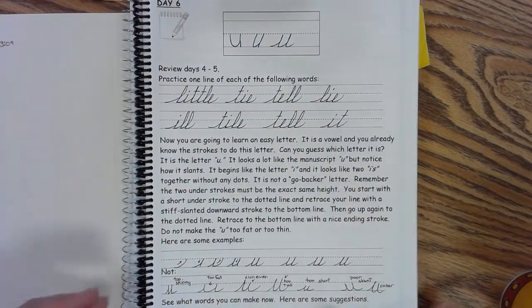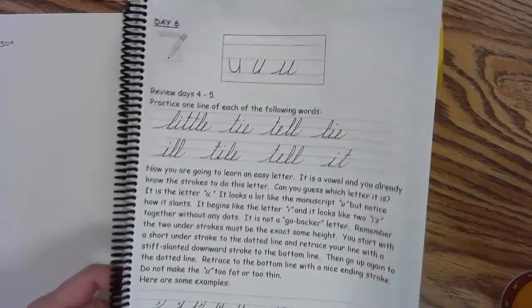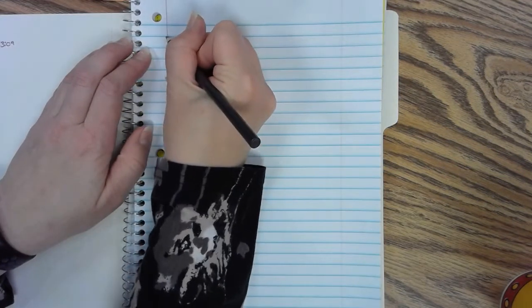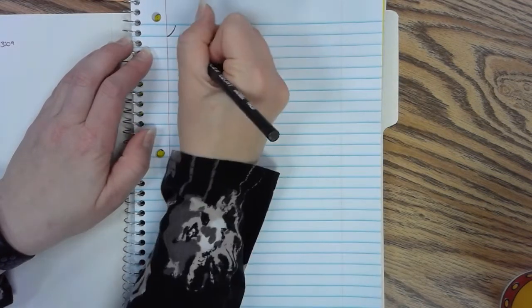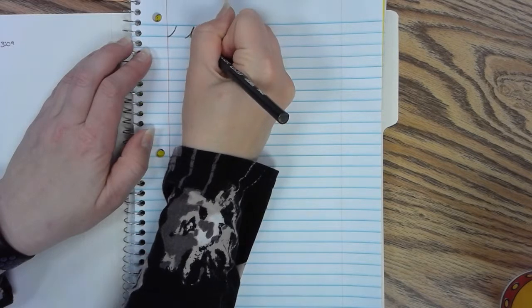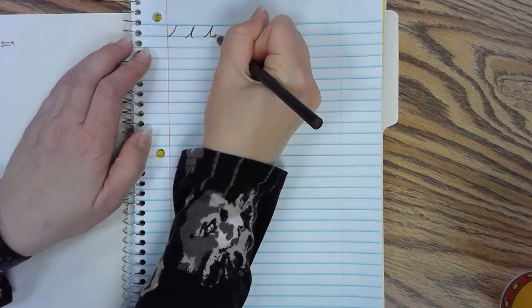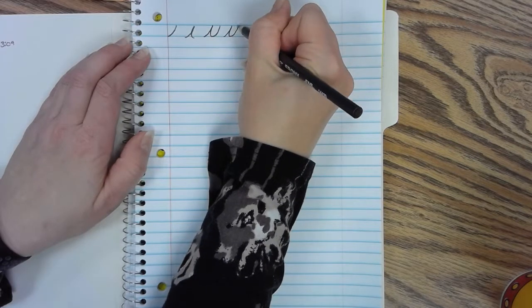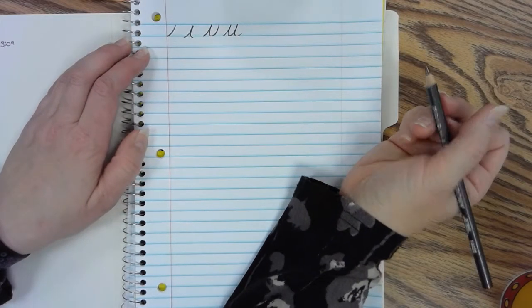You always want to practice what we did last time, so pick three or four words and do one line of each. So for the u, you do the swoopy up, the short one, swoopy up and down. It's kind of like the i, swoopy up and down and up and kick back out. So that's your u.